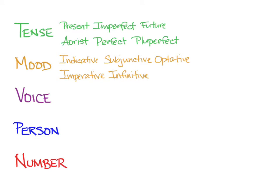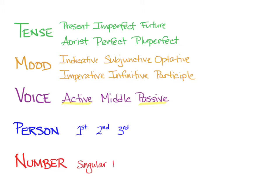You've learned present, aorist, and perfect infinitives, and we'll also get participles in unit 8. Of the three voices in Greek — active, middle, and passive — you've learned everything in the active voice, in which the subject of the verb is doing the action, and in the passive voice, in which the subject receives the action. You also know first, second, and third person, singular and plural number, and also dual, which we don't use very much. Now we're going to learn all of those persons, numbers, tenses, and moods in the middle voice.